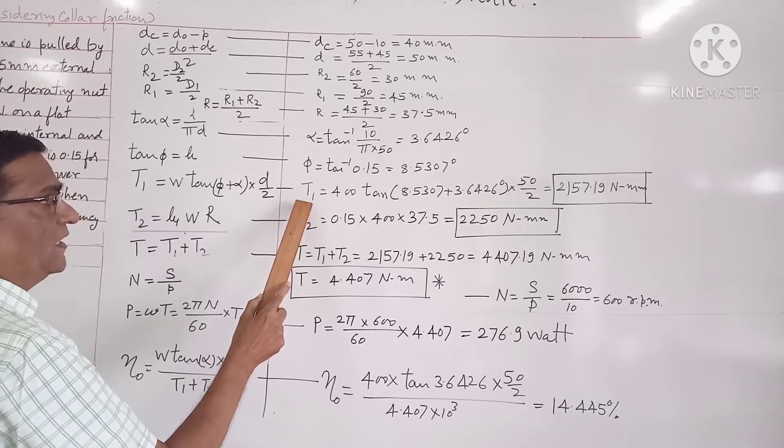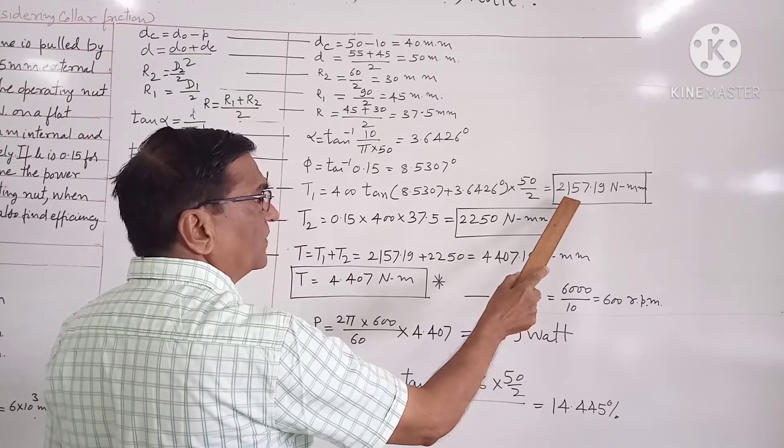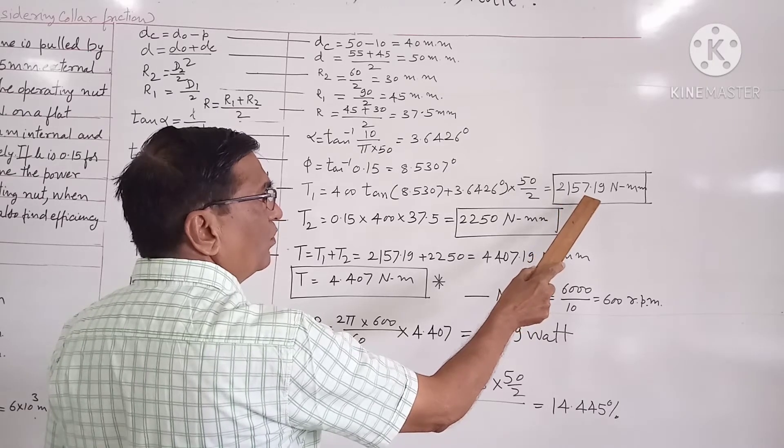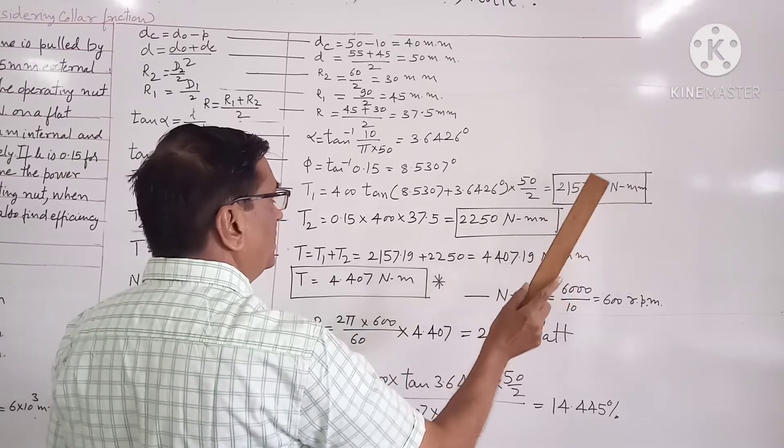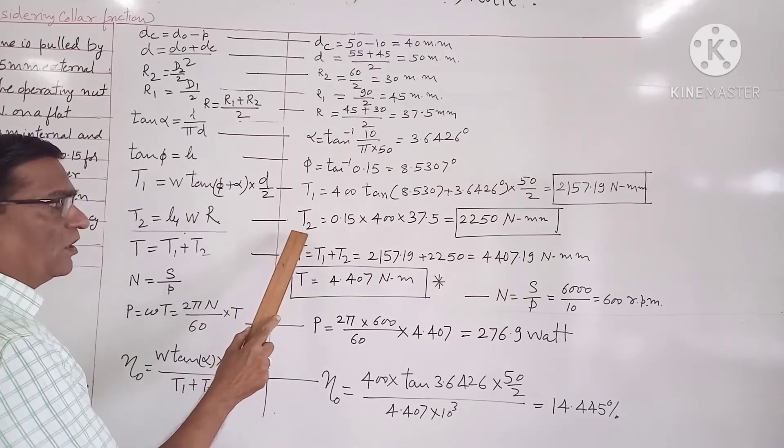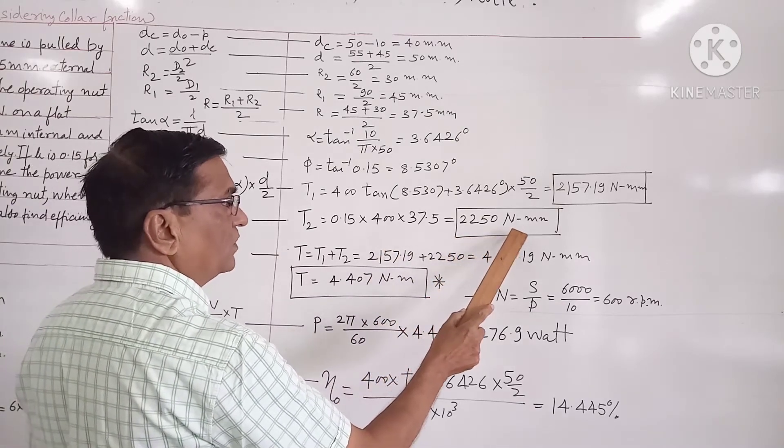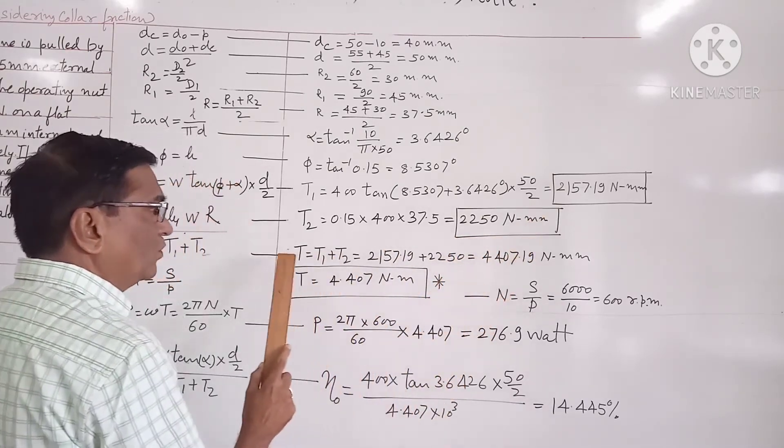From this formula we will calculate the torque required to overcome the friction between the screw and nut, that comes out to be T1 of 2157.19 newton millimeter, and T2 that is the torque required to overcome the collar friction, that comes out to be 2250 newton millimeter.